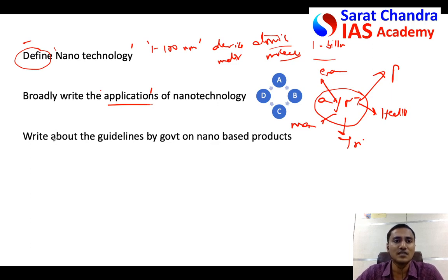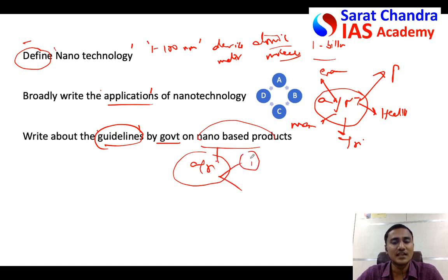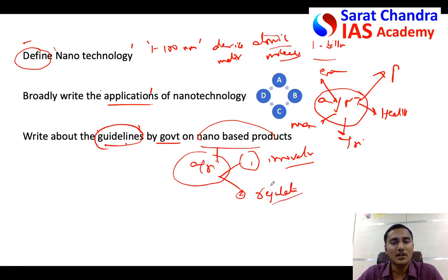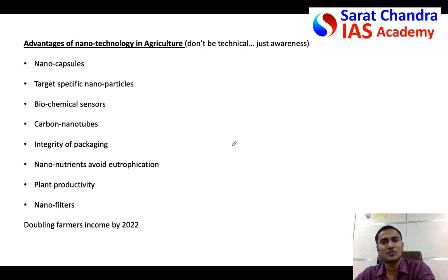Once done, come to the statement in the question. The question mentions that the government recently released certain guidelines for nano-based products and their application in agriculture. These guidelines address two things: first, encouraging innovation and research in nanotechnology related to agriculture; second, regulating the application of nanotechnology in agriculture to prevent toxicity and adverse effects on the environment or the health of farmers.